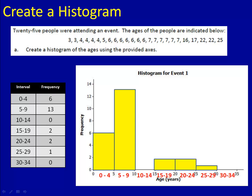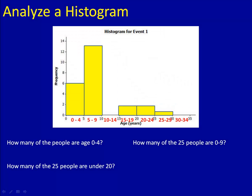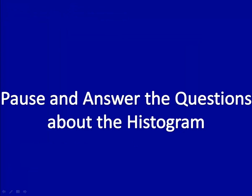Now let's answer some questions about this histogram. Here's what we want to know. So, how many of the people are age 0 to 4? How many of the 25 people are from 0 to 9? And how many of the 25 people were under 20 years old, or less than 20? Please pause the video here to answer these questions. Once you've finished, come on back and we'll talk about them.